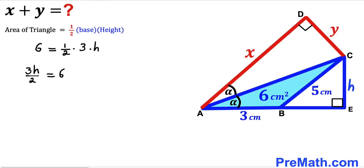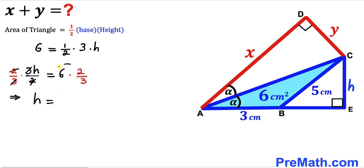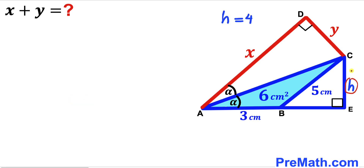We can write this as 3h/2 = 6. Isolating h by multiplying both sides by 2/3, the 2s and 3s cancel, giving us h = 4 cm. So our height h is 4 cm — in other words, side CE has a length of 4 cm.